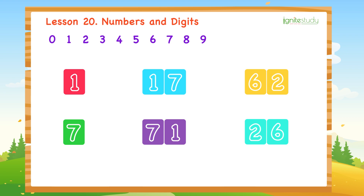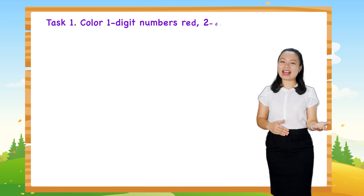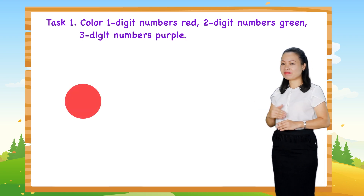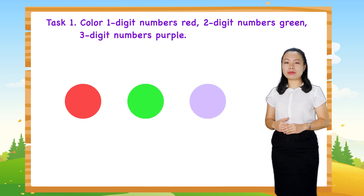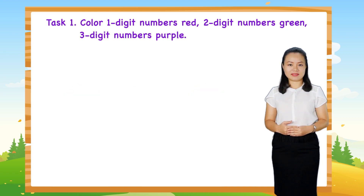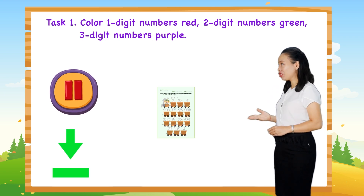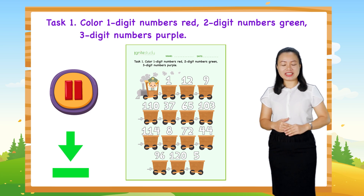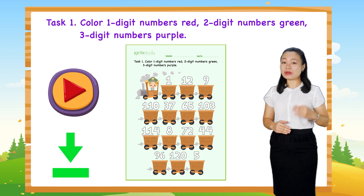Now can you tell the difference between numbers and digits? I'm sure you can. Let's have some practice. Task 1: Color 1-digit numbers red, 2-digit numbers green, and 3-digit numbers purple. To do this task, pause this video to download and print the worksheet below. Then try to do it on your own. When you finish, replay the video to check the answers with me.